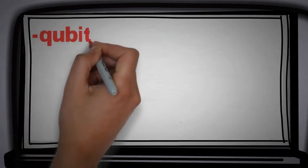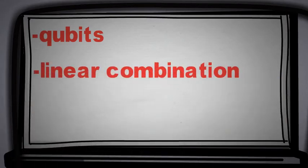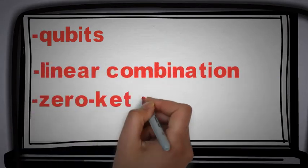When we say that qubits can be in superposition, it means that they can appear in linear combination of the two states, a zero-ket state and one-ket state.